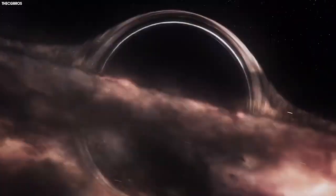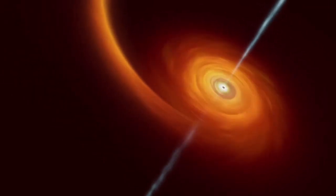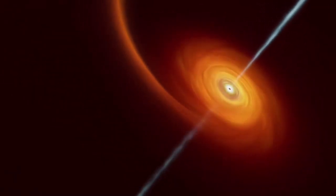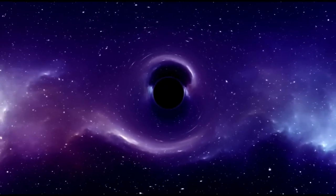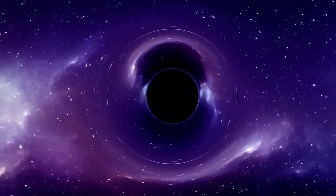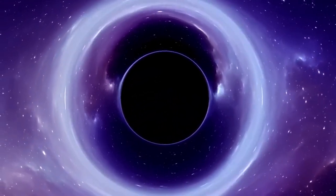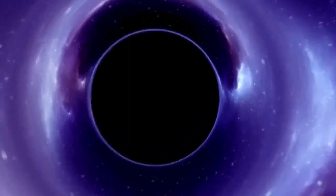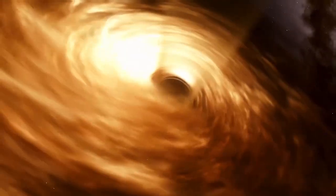The event horizon is a defining feature of black holes and marks the point of no return. It's the region of space-time where the gravitational pull becomes so strong that even light cannot escape. Beyond the event horizon, the black hole's gravity is so intense that it warps space and time, creating a singularity at the center. Until recently, it was believed that the size of the event horizon was fixed, determined solely by the mass of the black hole.